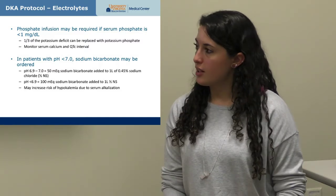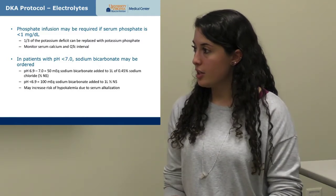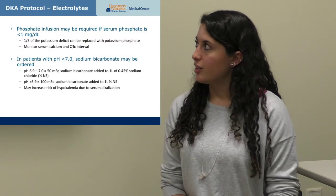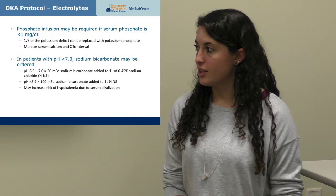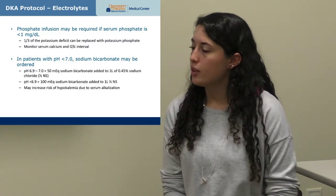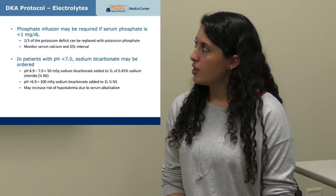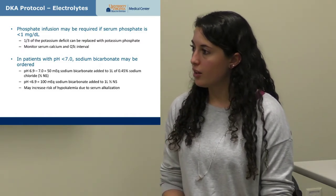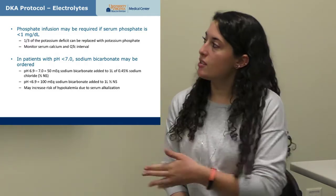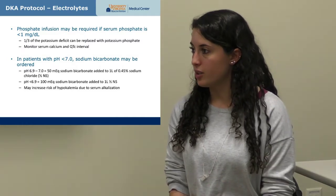Sodium bicarbonate may be used in acidotic patients, though it's not always required. It addresses the acidosis temporarily rather than the underlying cause. If pH is between 6.9 and 7, give 50 mEq of sodium bicarbonate; if pH is less than 6.9, give 100 mEq. Its use is debated — some providers favor it, others don't. It does carry an additional risk of hypokalemia, because correcting acidosis toward alkalosis drives potassium further into cells.